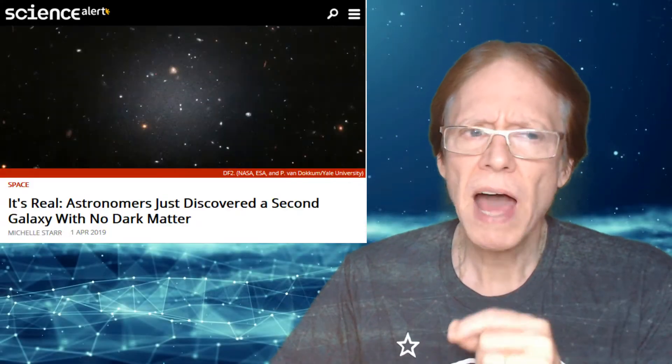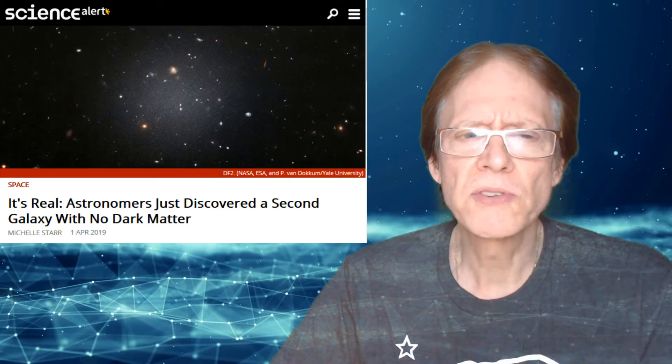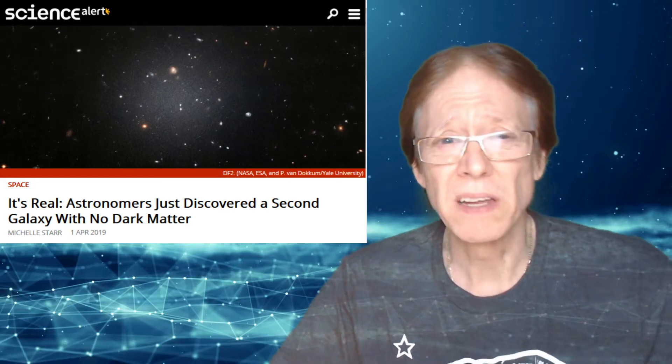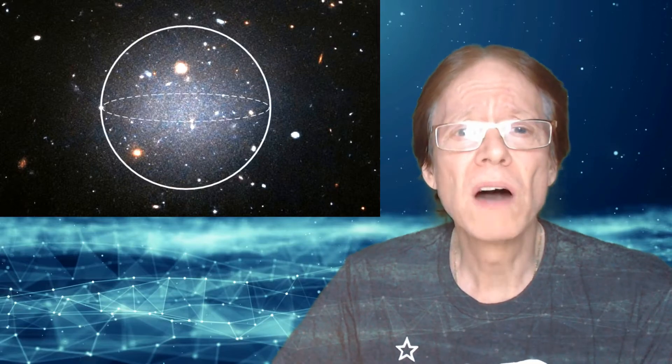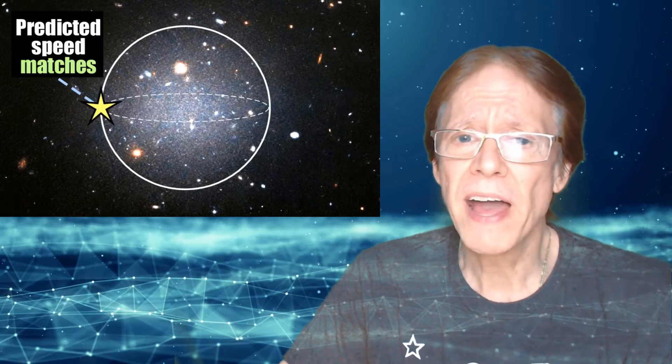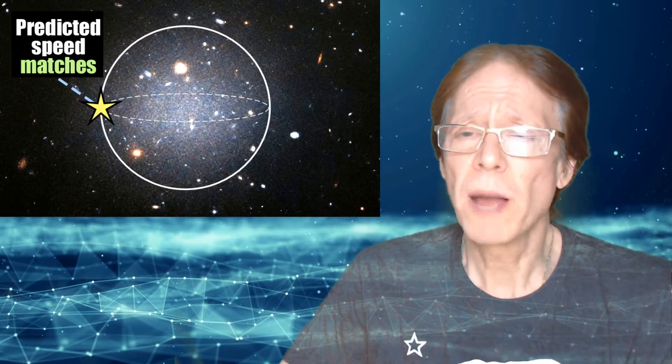The shape of a second galaxy without dark matter illustrates something many dissidents have suspected but few understand. Why dark matter is not needed has to do with something that the mainstream and most dissidents have not taken into account: the geometry of gravitational fields. When measuring the speed of stars on the edge, they match with Newton or Kepler's predictions.